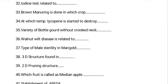The type of male sterility in marigold is Genetic Male Sterility (GMS), which very commonly occurs in marigold and also in pigeon pea. The 3D structure is found in the tertiary structure of protein. Regarding two-dimensional pruning structure: in the spur system of pruning, a two-dimensional structure is developed.